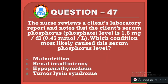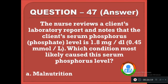Question 47: A nurse reviews a client's laboratory report and notes the client's serum phosphorus level is 1.8 mg/dL (0.45 mmol/L). Which condition most likely caused this level? Option A: malnutrition, B: renal insufficiency, C: hyperparathyroidism, D: tumor lysis syndrome. The correct answer is A, malnutrition causes a low phosphorus level.